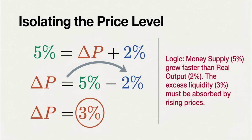The equation becomes: money supply growth equals price growth plus real output growth. So any new money created has to be absorbed by one of only two things — either it finances an increase in the actual stuff being made, growth in output, or it just pushes up the prices of everything that already exists, which is inflation. There's no third option if spending habits don't change. You print money, it has to go somewhere. It either buys new things or makes the old things more expensive.